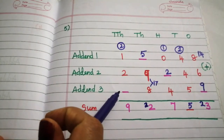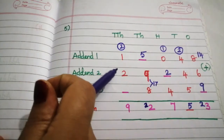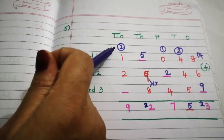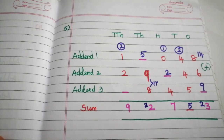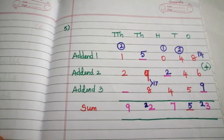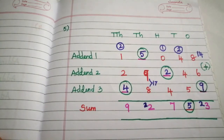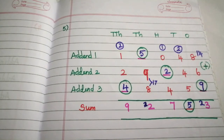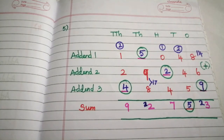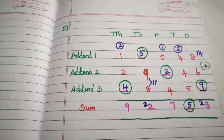For the final digit, 2 plus 1 is 3, 3 plus 2 is 5, and 9 minus 5 is 4. So now we have found all the missing digits. Today we learned how to find missing digits for addition problems. If you have any doubts, please write in the comment box. If you like this video, please like, share, and subscribe the channel. Thank you.